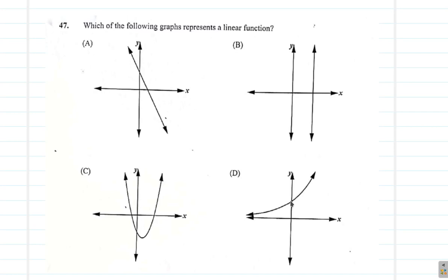Which of the following graph represents a linear function? Okay, now, here, you know that a linear function has a straight line. So, C is out of it and D is out of it.